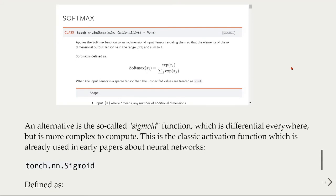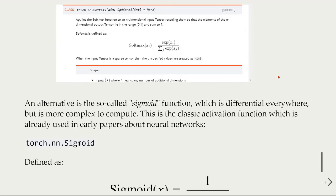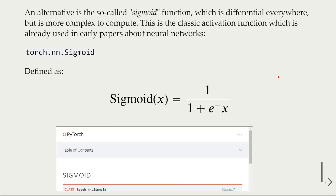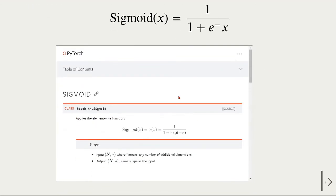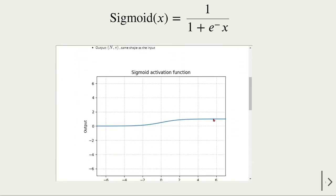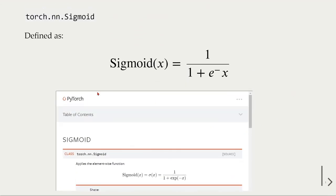An alternative activation function is the so-called sigmoid function, which is differentiable everywhere but is more complex to compute. This is the classic activation function which is already used in the early papers about neural networks. The sigmoid is given by this function here, and we find it and also see how it looks like in PyTorch documentation.